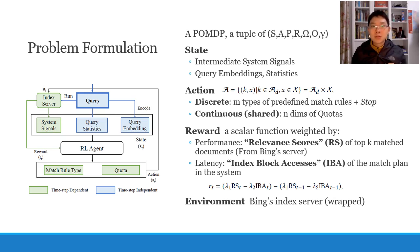Let's go more deeply into the problem formulation. For the state, there are two parts. The first is the time-step-dependent part, including intermediate signals fetched from the Bing system such as inverted index position. The other is the time-step-independent part, which is fixed at any time step in an episode and contains query embeddings and statistical information like query length and popularity. In every time step, we use the state to decide a match rule type and a quota for that rule. A complete match plan consists of several match rules and a stop action. Thus, the action is composed of a discrete part of rule types and a continuous part for quotas.